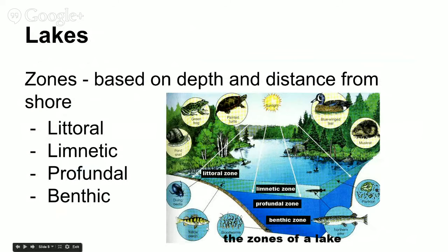The first zone out at the edge is the littoral zone. That zone is usually less than two meters deep, it has rooted vegetation, and sunlight can reach all the way to the bottom. This is the shore of the lake. Then we have the limnetic zone, which is the top layer of water out in the middle of the lake, farther away from the shore, where photosynthesis can definitely happen.